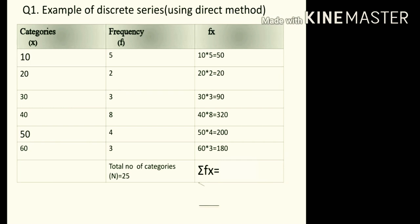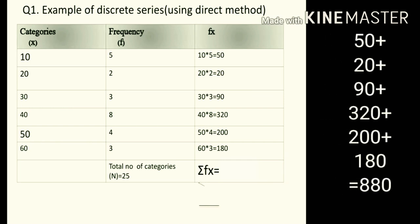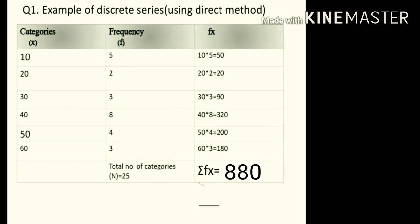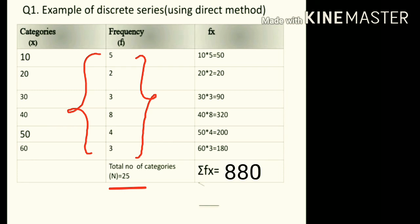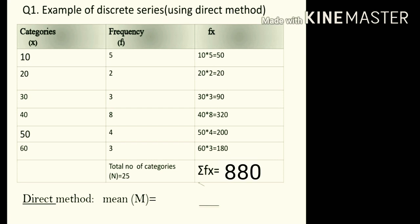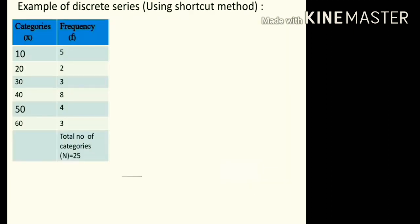We are going to obtain σfx — whatever we got in fx, we sum it up, so it will be 880. To obtain n, we total the frequencies: 5 plus 2 plus 3 plus 8 plus 3, and so on, giving us 25. Then we divide σfx, which is 880, by 25, and we obtain 35.2 as the answer.